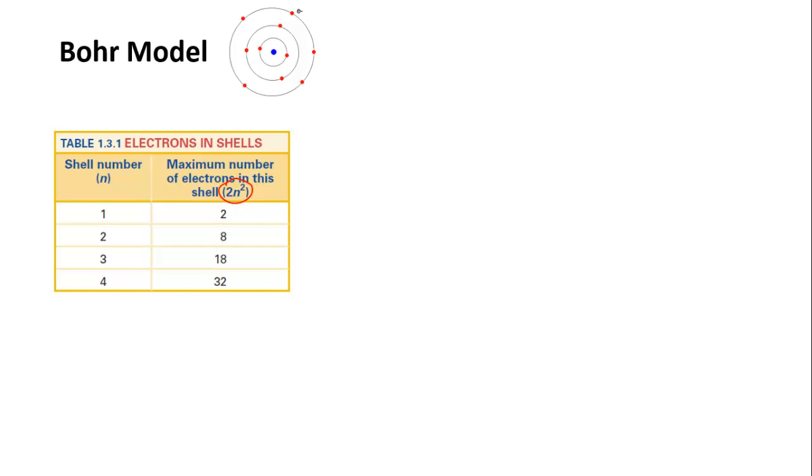So for n equals 1, the lowest energy level, the maximum number of electrons is 2 times 1 squared, which is 2. And for n equals 2, the second energy level, the maximum number is 2 times 2 times 2, which is 8, and so on.